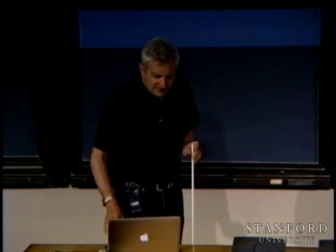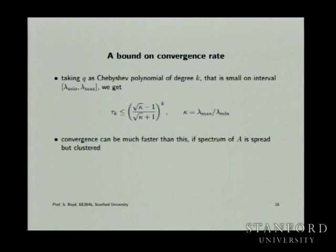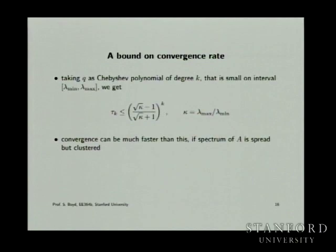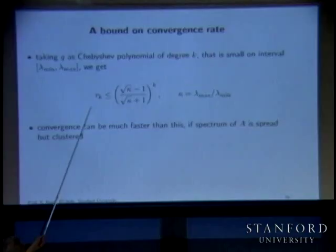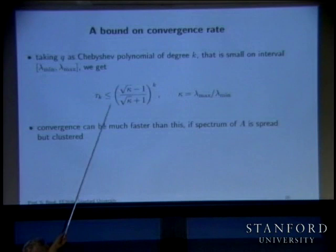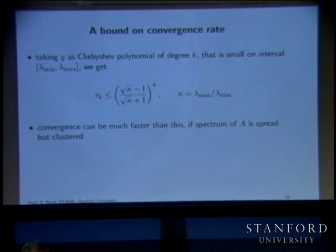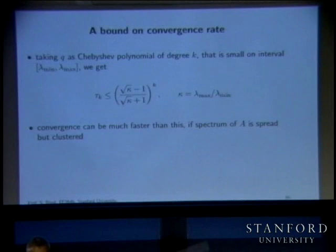Classical bounds: if the only thing you know about A is that its condition number is kappa, and you use a Chebyshev polynomial on the interval [lambda_min, lambda_max], you get a convergence bound. A simple gradient method would have kappa in both numerator and denominator of the convergence factor, whereas CG gives you the square root — that's much better. These bounds are upper bounds; in practice convergence is often much faster.